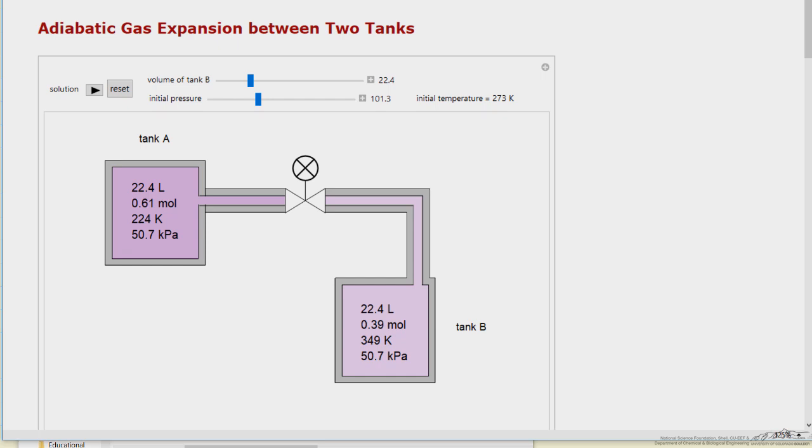The tank on the right is at higher temperature because of work being done on the gas. The tank on the left is at lower temperature since it did the work, and the average temperature of the system doesn't change.